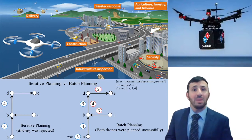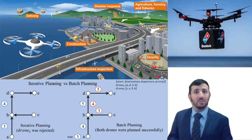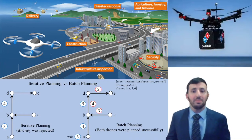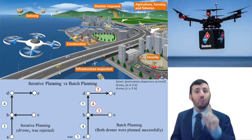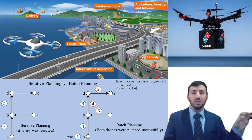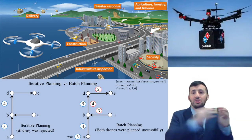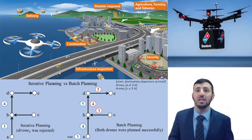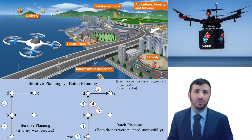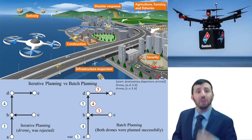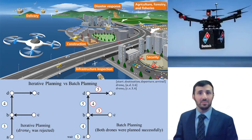Prior works observed a planning technique called iterative planning. Iterative planning is when you plan one drone at a time. You take a drone and its starting point and plan its trajectory until it gets to its destination. After that, you move on to the next drone. And the order of iterative planning is based on when the request arrives to the system.